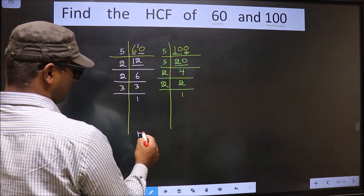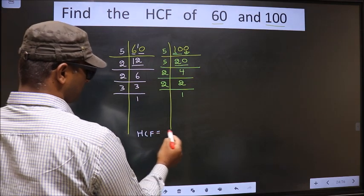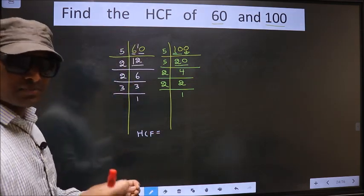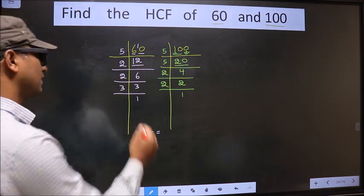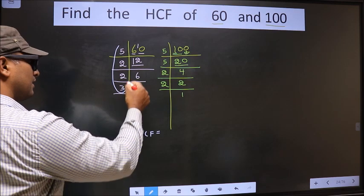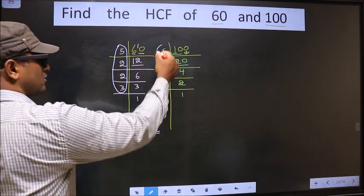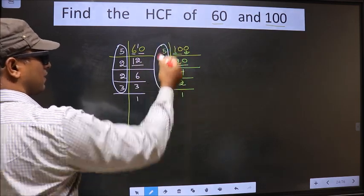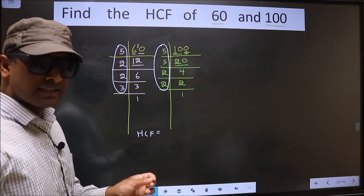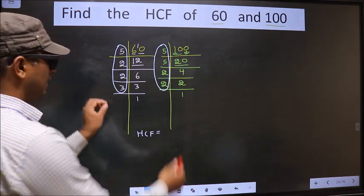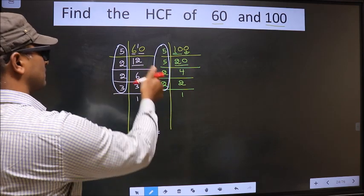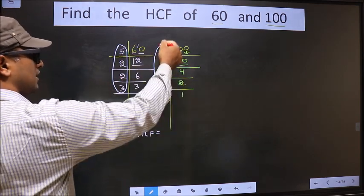Now, our HCF is the product of numbers which should be present over here and also here. I repeat, HCF is the product of numbers which are present in these 2 places, here and also here.